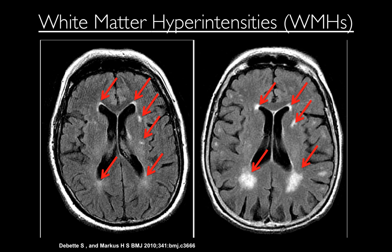White matter hyperintensities are exactly what the name implies — very bright regions within the white matter of the brain. These are typical for subjects that have dementia, are developing dementia, or Alzheimer's disease. Neurologists commonly use white matter hyperintensity load, or the amount of white matter hyperintensity in the brain, as an indicator of disease progression. I hope to show that we can do better — finding regions where white matter hyperintensity is developing — which requires multiple imaging modalities.